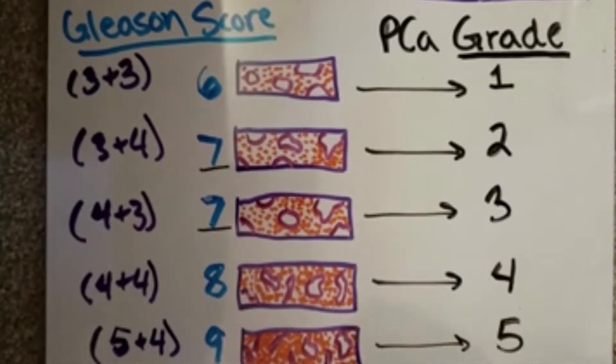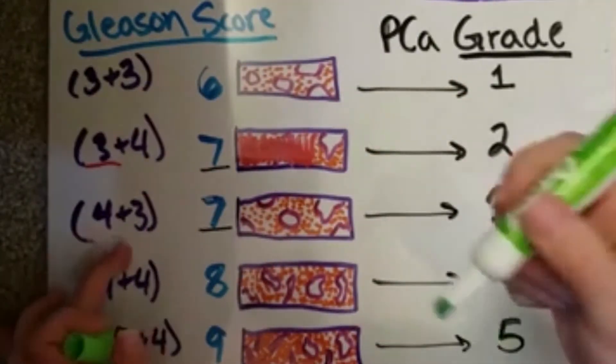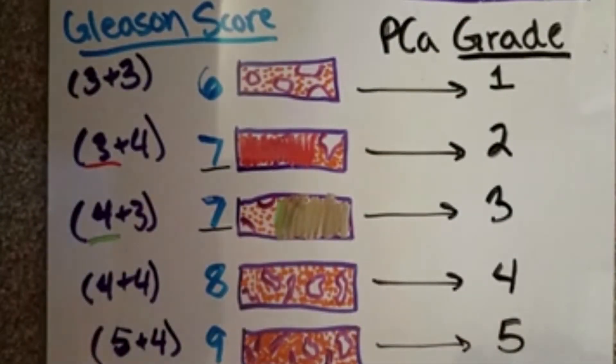Capital G grade prostate cancer is therefore on a scale of one to five. Confused yet? This has yet to fully infiltrate urology practice, and it is unclear if it will become more established.